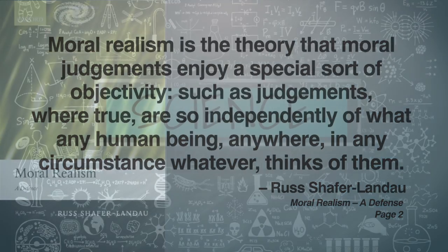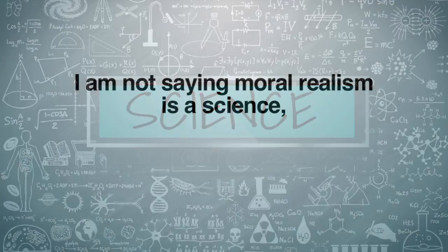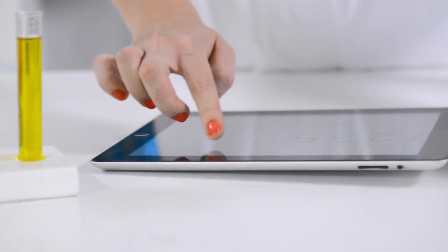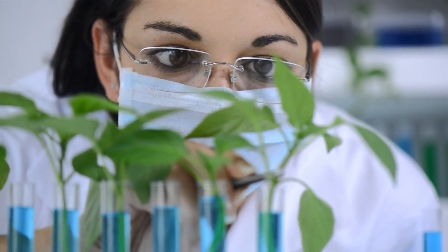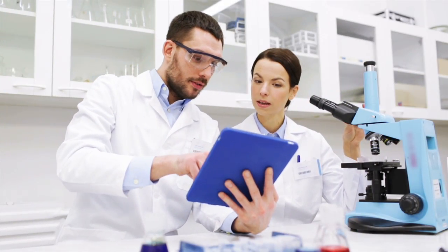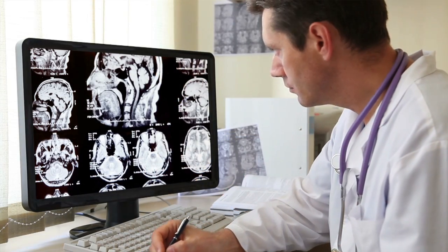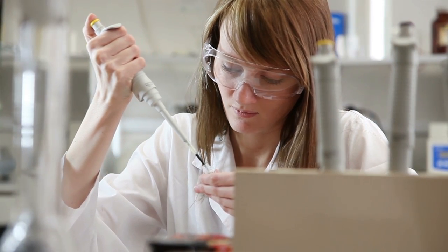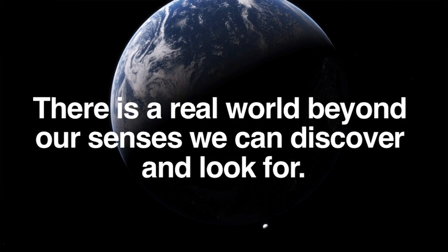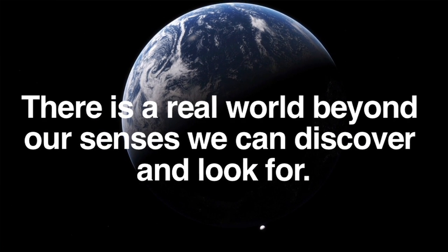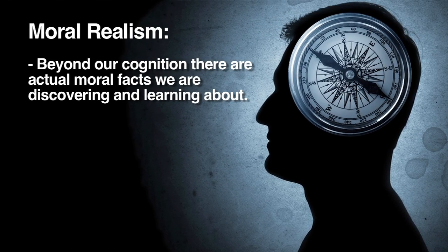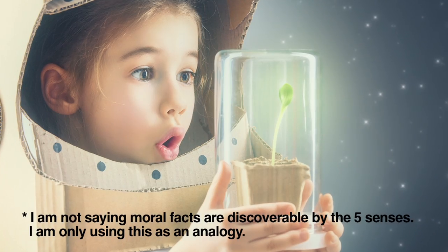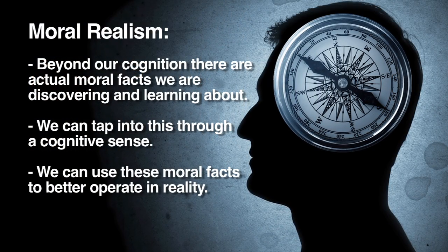A good way to understand what moral realism is, is to compare it to science. To be clear, I'm not saying moral realism is a science — I'm using the study of science as an analogy. Just about everyone agrees the study of science is meant to be objective. We look for data in the real world and try to build theories based on our shaping principles about what that data means. Sometimes we disagree on how to interpret or read the data, but we still agree science is not dependent on our subjective opinion — that in fact there is a real world beyond our senses we can discover. Moral realism functions in a similar manner. Beyond our cognition there are actual moral facts we are discovering and learning about. We can tap into this through a cognitive sense, similar to how we can discover the external world through our five senses, and then use these moral facts to better operate in reality.